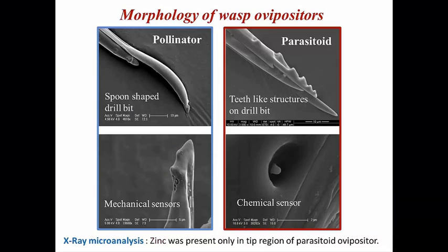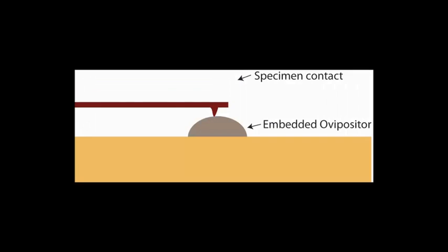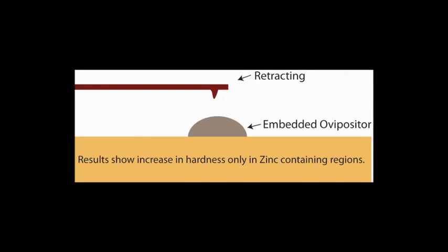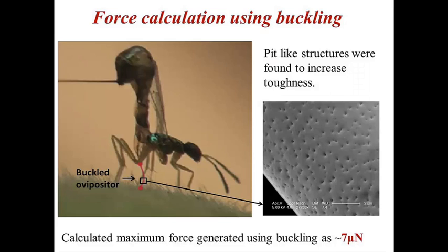There are clear differences observed in the morphology between a pollinator and a parasitoid ovipositor. Further, X-ray microanalysis showed the presence of zinc only in the tip region of the parasitoid ovipositor. Interestingly, AFM results showed increased stiffness and hardness values in the regions containing zinc.